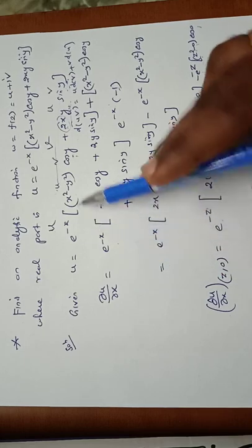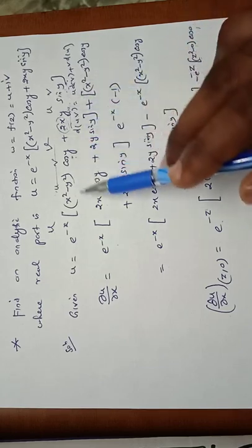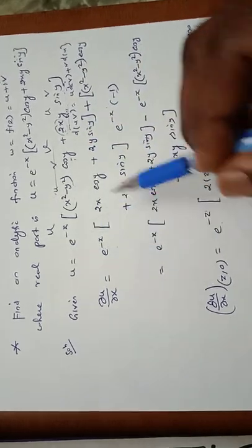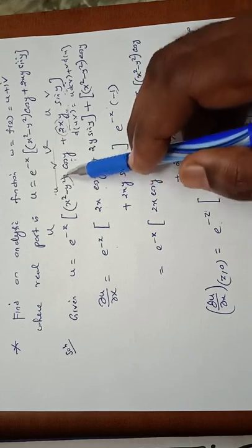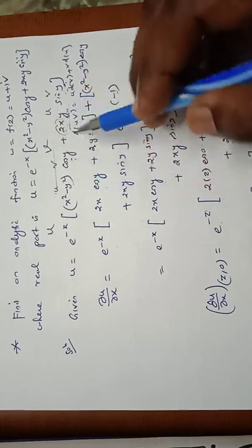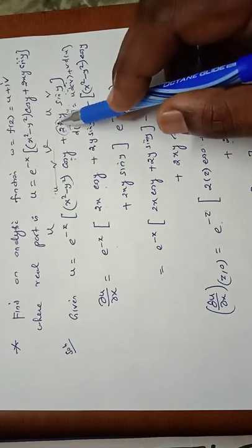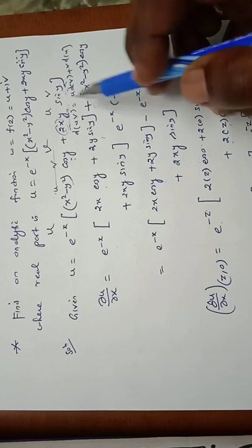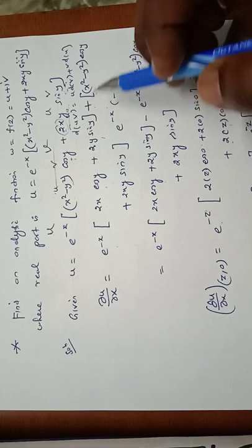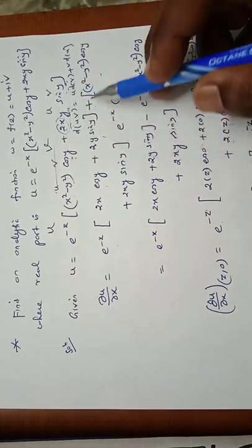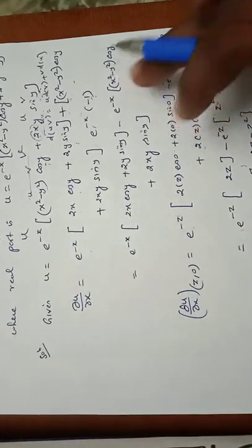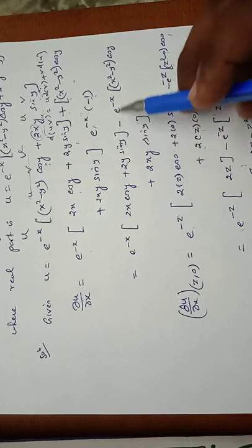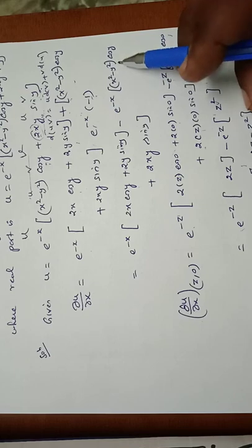To find ∂u/∂x, e^(-x) is fixed and we differentiate the inner function with respect to x. Differentiating x² gives 2x, so we get 2x·cos(y). The y² term becomes zero, and differentiating 2xy·sin(y) with respect to x gives 2y·sin(y). We also apply the product rule, multiplying the entire term (x² - y²)cos(y) + 2xy·sin(y) by the differentiation of e^(-x), which is -e^(-x).